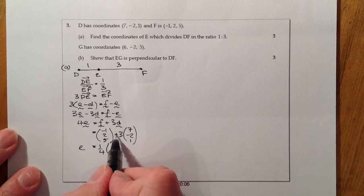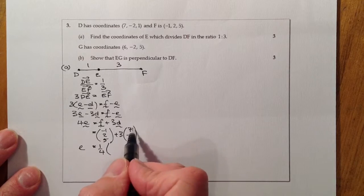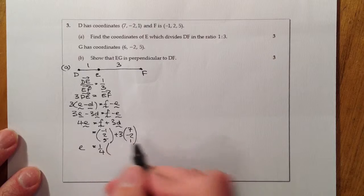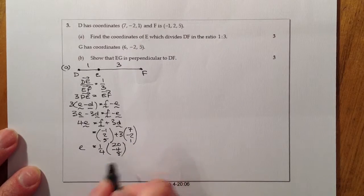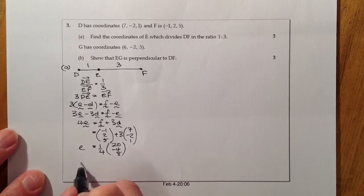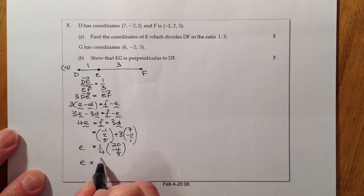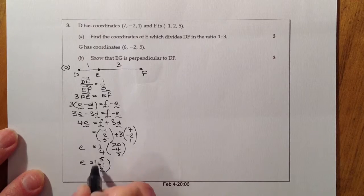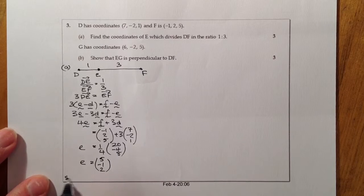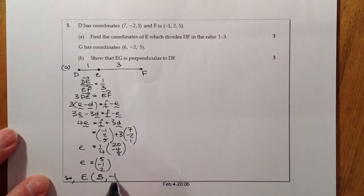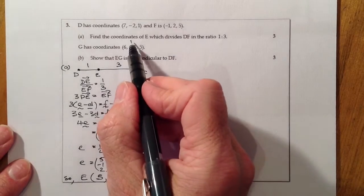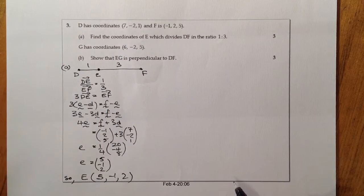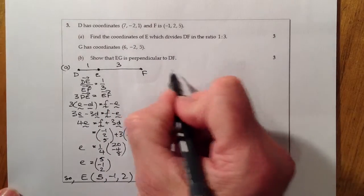I'll gather these together and divide by four. That's (-1 + 21, 2 - 6, 5 + 3) divided by 4, which gives me (5, -1, 2). So E is (5, -1, 2) in coordinate form. That's what I've been asked for, so that's complete.